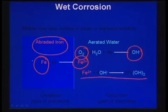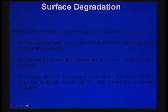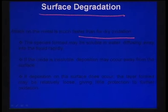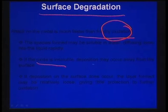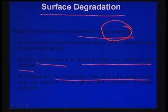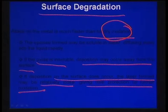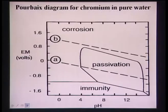Surface degradation is an attack on metals much faster than dry oxidation. Dry oxidation is corrosion in the absence of water, under ambient conditions. If the oxide is insoluble, the layer formed may be relatively loose, giving some protection against further oxidation. However, dry oxidation is not relevant for biomaterial applications.